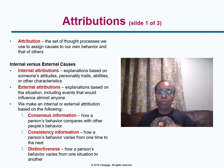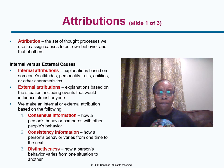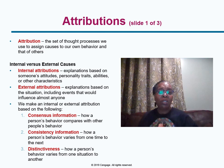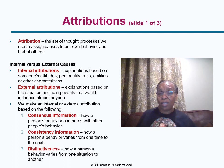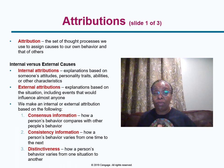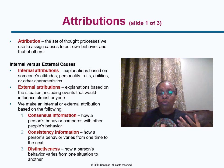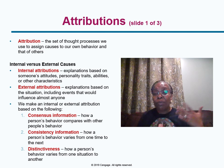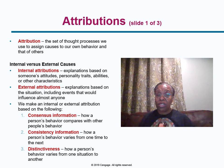Let's talk about attributions. Attributions are the set of thought processes by which we assign internal or external causes to behaviors. Internal attributions are explanations based on someone's attitudes, personality traits, characteristics, or abilities. External attributions are things outside of you — situations or events that might influence behavior. We make internal or external attributions based on consensus (comparing ourselves to others), consistency (how often we see a particular behavior occur), and distinctiveness (how the behavior differs from one situation to another).